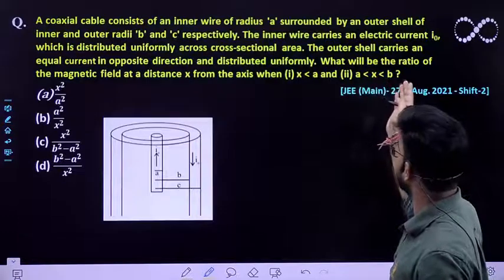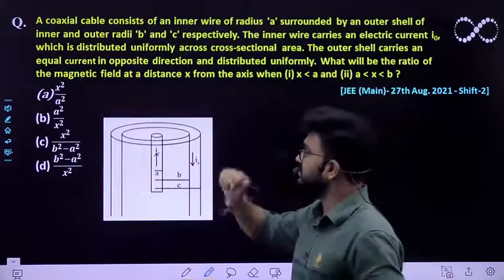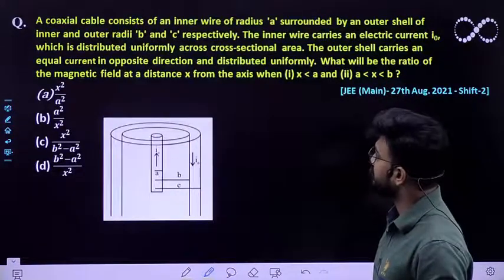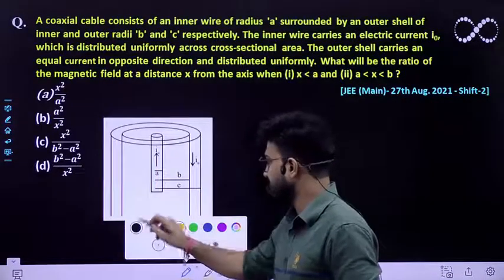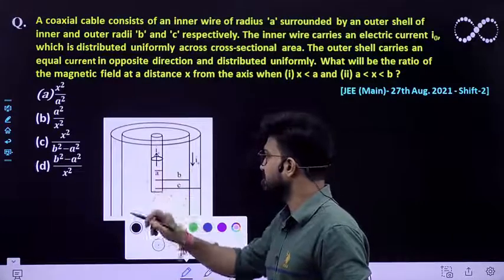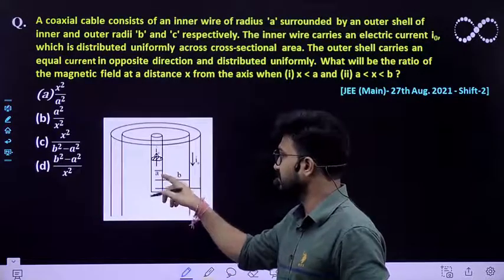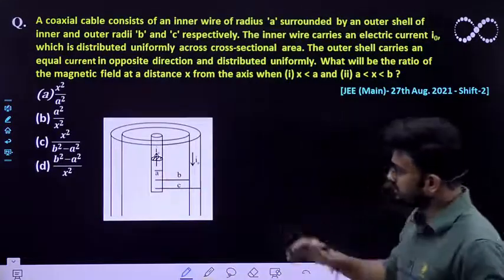The inner wire carries an electric current of I0 which is distributed uniformly across its cross-sectional area. So this I0 has been distributed over its area. So what would be this area? It would be pi A square. It has been distributed over it.